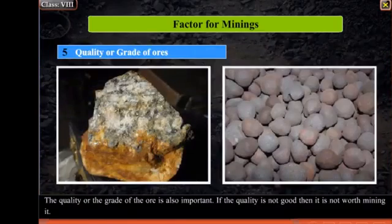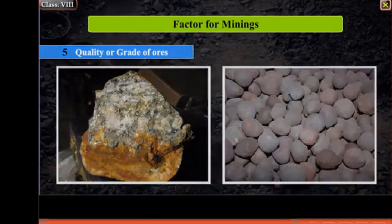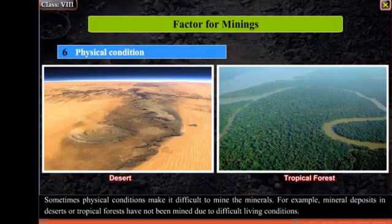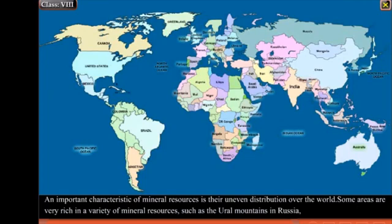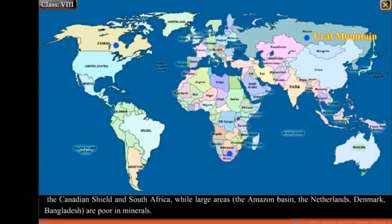The quality or the grade of the ore is also important. If the quality is not good, then it is not worth mining it. Sometimes physical conditions make it difficult to mine the minerals. For example, mineral deposits in deserts or tropical forests have not been mined due to difficult living conditions. An important characteristic of mineral resources is their uneven distribution over the world. Some areas are very rich in a variety of mineral resources such as the Ural Mountains in Russia, the Canadian Shield, and South Africa, while large areas like the Amazon Basin, the Netherlands, Denmark, and Bangladesh are poor in minerals.